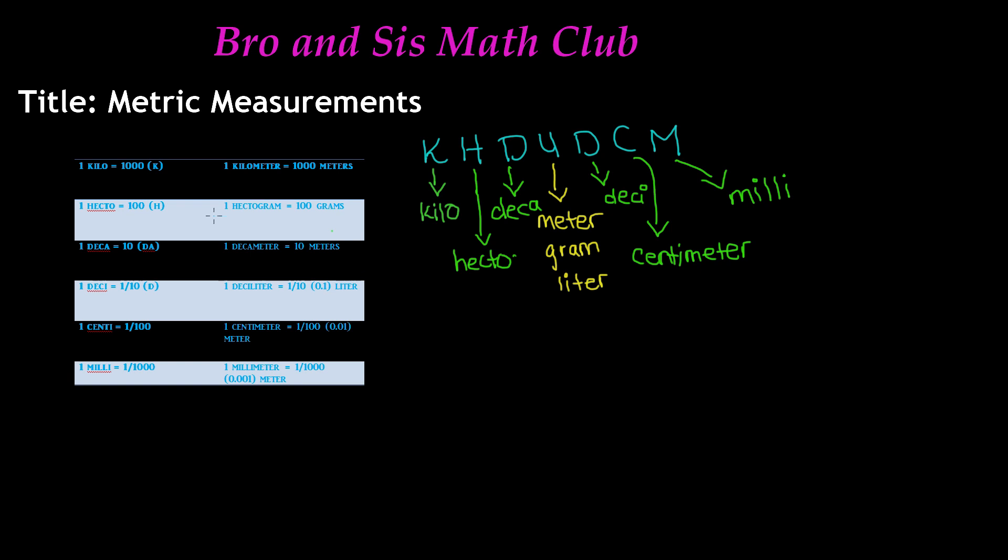Usually we see kilo, centi, and milli. Deci, deka, and hecto are the three we usually don't see, so we aren't as familiar with them. I would spend more time studying these. In usual mathematics, we normally see kilometer, millimeter, or centimeter—of course we see them on rulers. So hecto, deka, and deci are the ones you should spend more time with if you need extra practice.